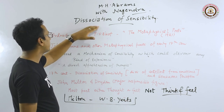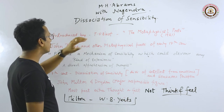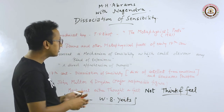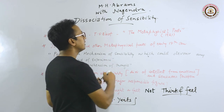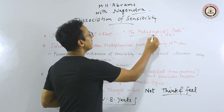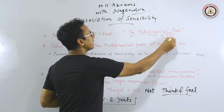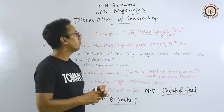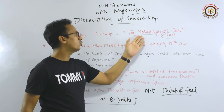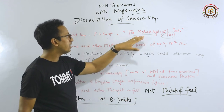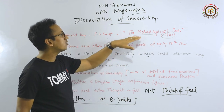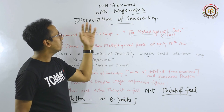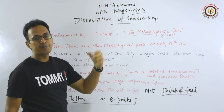This term — Dissociation of Sensibility — was introduced by T.S. Eliot in his essay 'The Metaphysical Poets' in 1921. It is very important that you remember which essay or article major topics are occurring in.